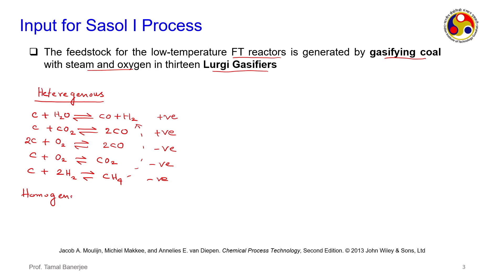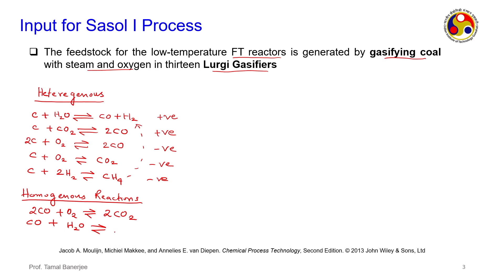The homogeneous reactions in the gasifier involve all gaseous phases: 2 moles of CO reacting with oxygen to form 2 moles of CO₂, and CO reacting with water (steam) to form CO₂ plus H₂. Both of these are exothermic reactions with negative heat of reaction. These heterogeneous and homogeneous reactions all take place in the gasifier. One well-known gasifier manufacturer is Lurgi.